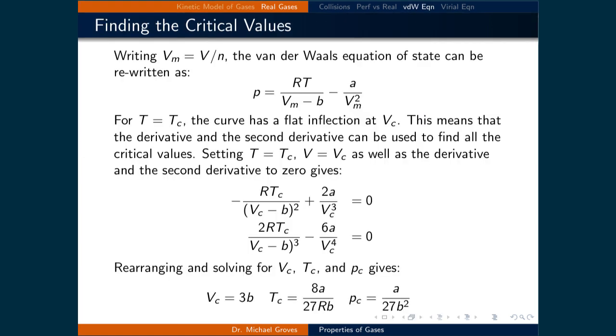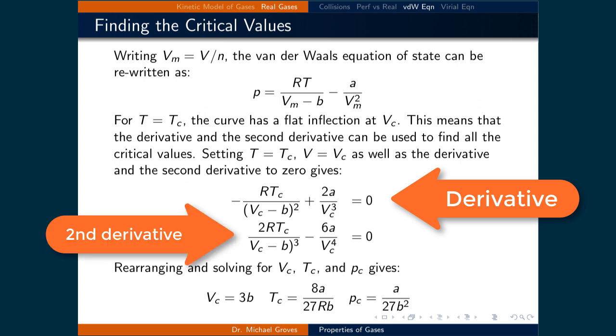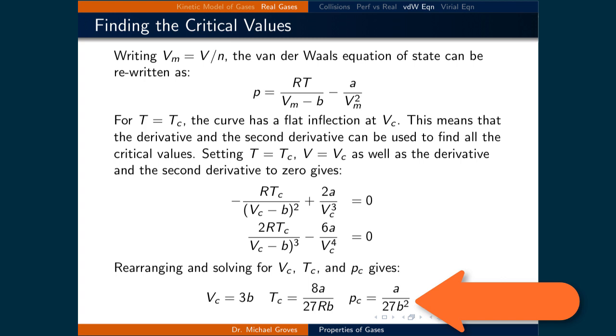The flat inflection point at the critical point means that the derivative and the second derivative of the van der Waals equation of state can be set to zero. This allows us to determine the constants a and b for each gas based on its unique critical point. In order to simplify this process, the van der Waals equation of state can be rewritten in terms of molar volume. We can then solve the critical volume, temperature, and pressure in terms of the parameters a and b. Of course, this process can also be reversed if the critical values are known in order to find a and b.